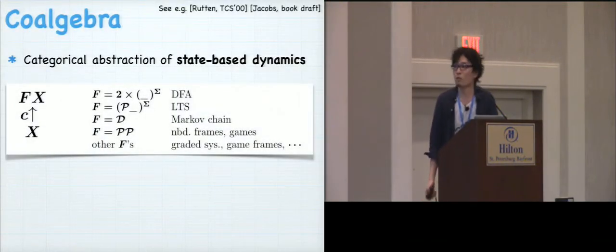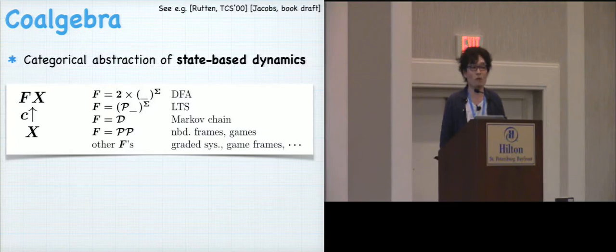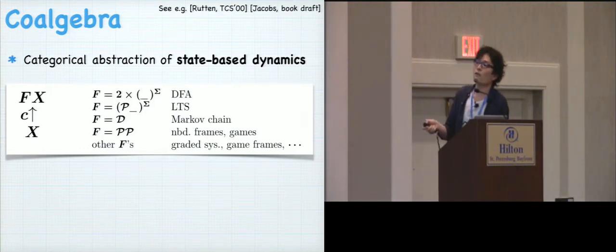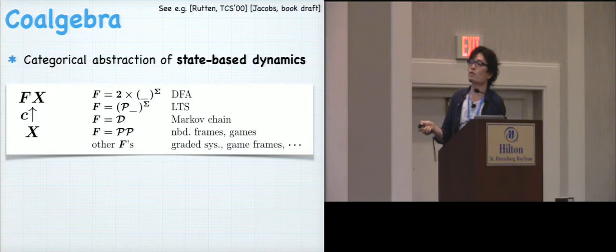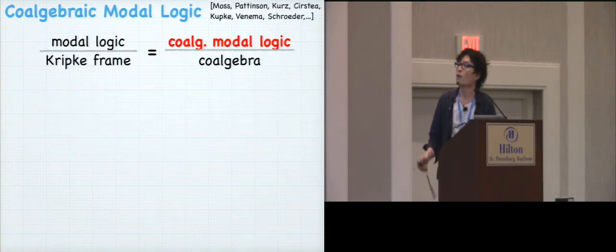So coalgebra, maybe you know it, because Alexandra, I heard that she gave a wonderful introduction talk in the mentoring workshop. But it's categorical abstraction of state-based dynamics. Like, x is the state space and c is the dynamics. And this functor F can be taken variously, and different F models different class of dynamics, like finite automata, LTS. You can also think of probabilistic systems and so on.